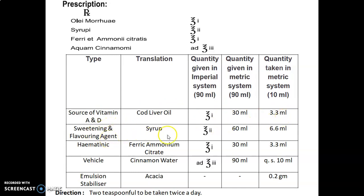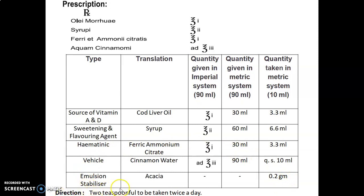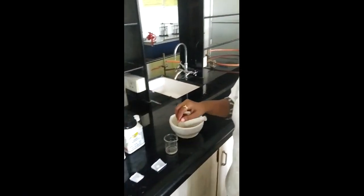Syrup (sweetening and flavoring agent): 2 ounces = 60 ml; quantity taken = 6.6 ml. Ferric ammonium citrate (hematinic): 1 ounce = 30 ml; quantity taken = 3.3 ml. Cinnamon water (vehicle): add to 3 ounces = 90 ml; quantity taken sufficient up to 10 ml. Acacia (emulsion stabilizer): quantity sufficient; quantity taken = 0.2 g. Direction: two teaspoonfuls to be taken twice a day.